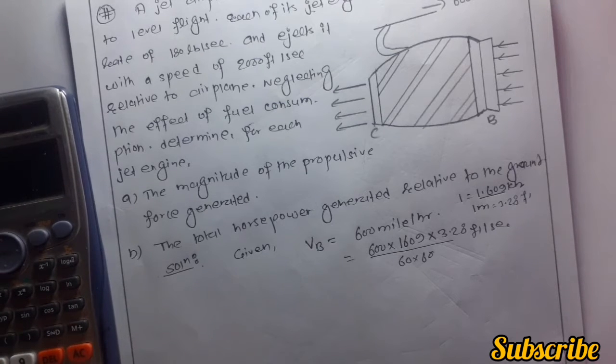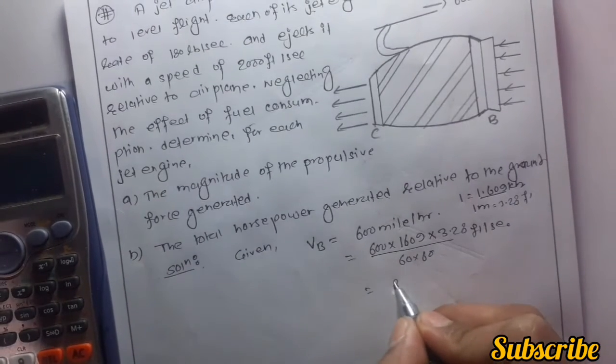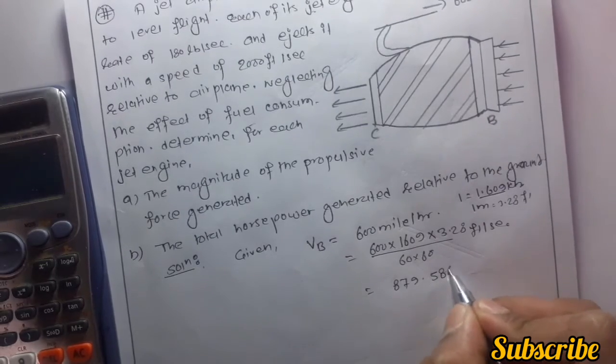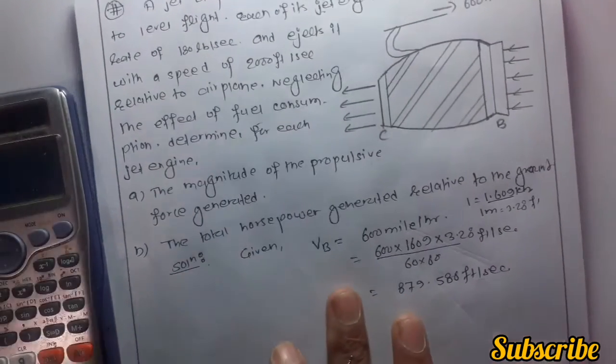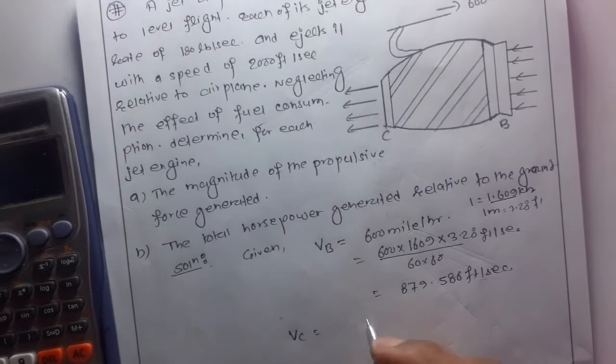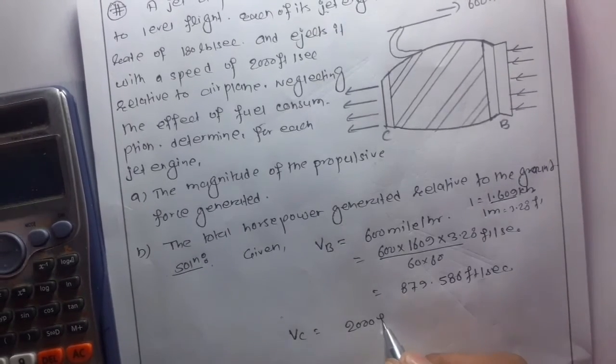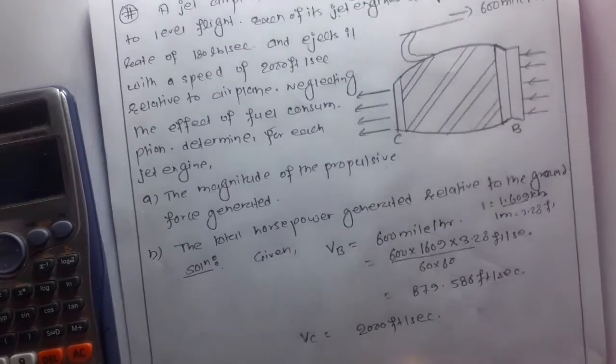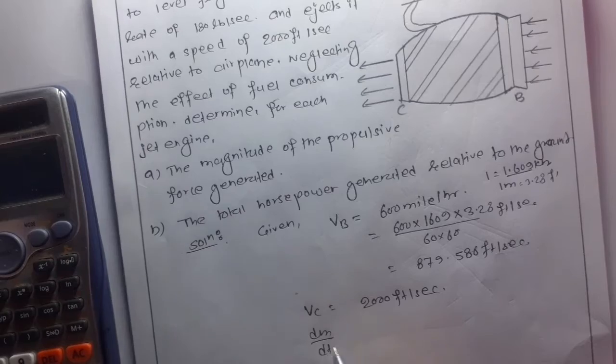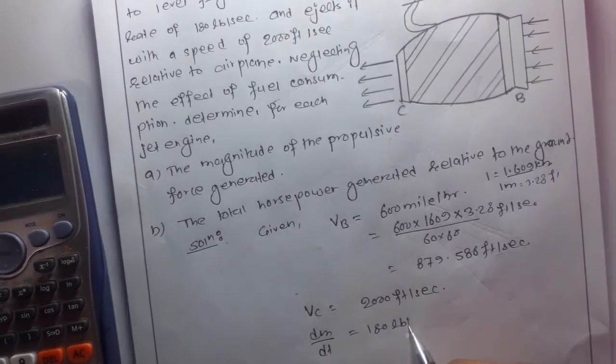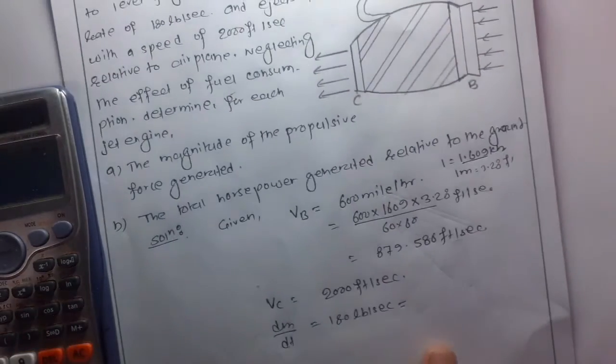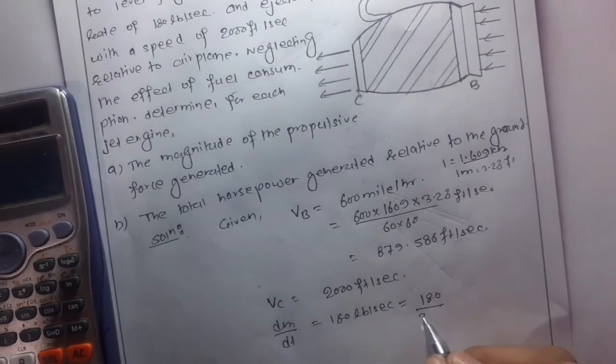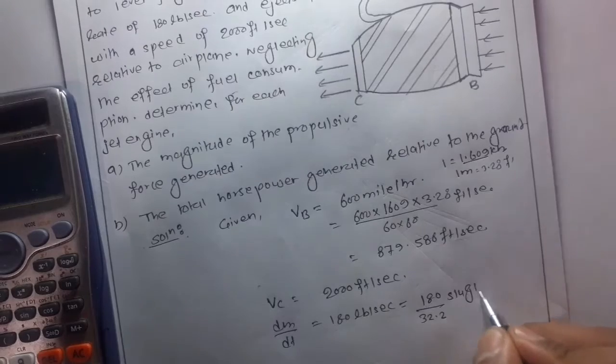So this is 600 times 1609 times 3.28 divided by 3600, which equals 879.586 feet per second. The velocity VC is BC, equal to 2000 feet per second, and also dm/dt is equal to 180 lb per second.